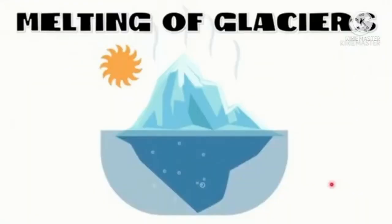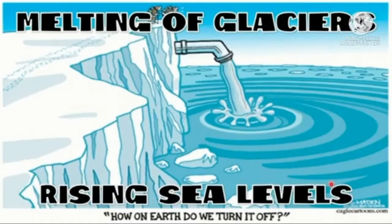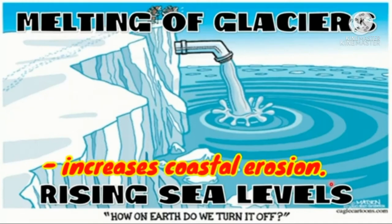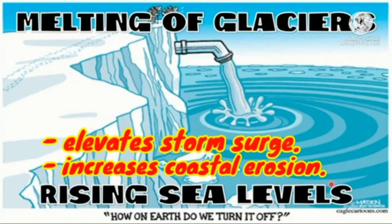Fourth, melting of glaciers. Melting of glaciers may add to the rising of sea levels, which in turn increases coastal erosion and elevates storm surge.